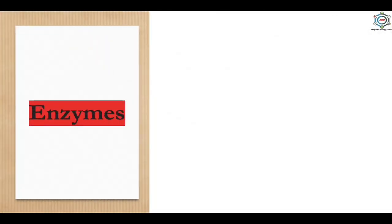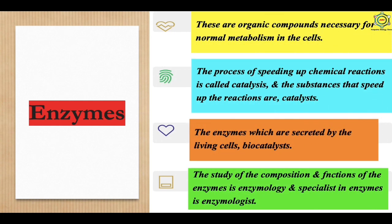Enzymes are organic compounds necessary for normal metabolism in cells. They are needed in small amounts and are produced by living cells to speed up spontaneous biochemical reactions in and outside the cells. The process of speeding up chemical reactions is called catalysis, and the substance that speeds up reactions is a catalyst. Enzymes secreted by living cells are known as biocatalysts, and the study of their composition and function is enzymology. The reactants in an enzyme-catalyzed reaction are called substrates, and the substances produced are products.